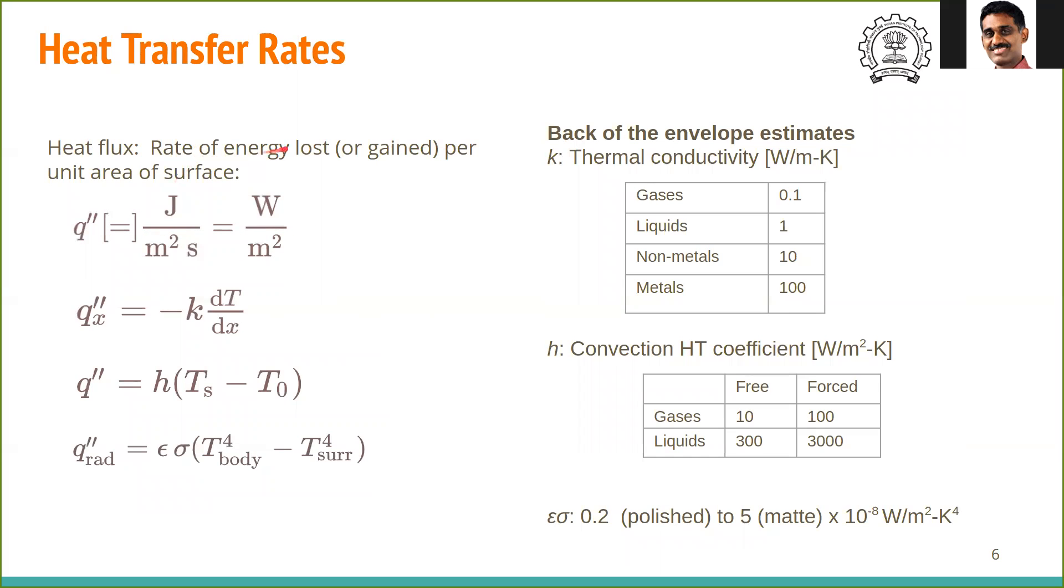So let me just recall this notation. Q double prime denotes rate of energy loss or gained per unit surface area. So rate of energy means joules per second per unit surface area, that is watt per meter square in SI units. And we have three modes of transfer. Q double prime x is K dT by dx, this is Fourier's law. K is the thermal conductivity. For convection, we have Newton's law of cooling: Q double prime is given by H times (TS minus T naught). And for radiation, in an engineering approximation, we have it as epsilon sigma times T power 4 body, if it is higher temperature, minus T power 4 surroundings. So this is the quick equation that you should consider at the surface of the object.